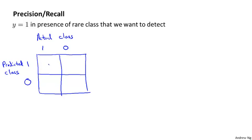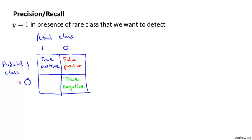If the actual class is 1 and the predicted class is 1, that's called a true positive — our algorithm predicted positive and the example is indeed positive. If the predicted class is 1 but the actual class is 0, that's called a false positive — our algorithm thought the patient has cancer but in reality they do not. And if the predicted class is 0 but the actual class is 1, that's called a false negative — our algorithm predicted 0 but the actual class was 1.